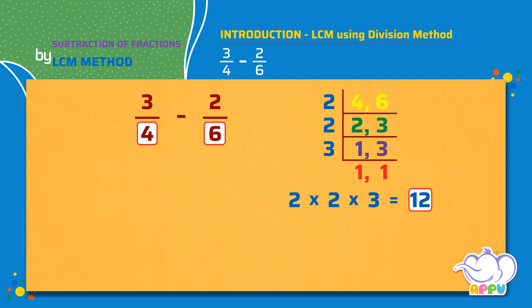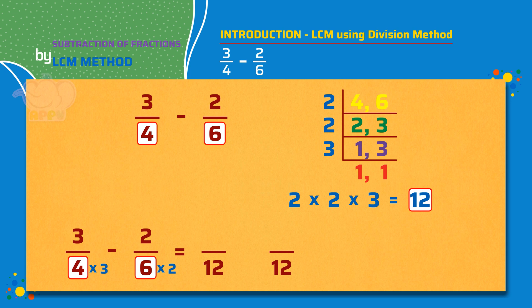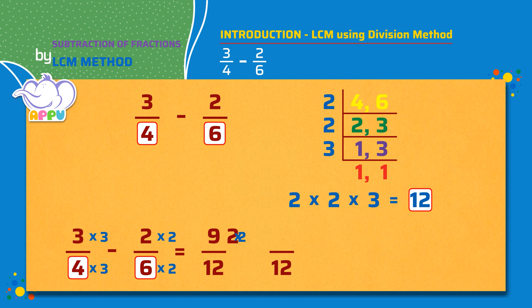Let's make the denominator the same as 12. We multiply the denominator of the first fraction with 3: 4 times 3 equals 12. Next we multiply the denominator of the second fraction with 2: 6 times 2 equals 12. Since we multiply the denominator of the first fraction with 3, we multiply the numerator with the same number: 3 times 3, we get 9 by 12. Since we multiply the denominator of the second fraction with 2, we multiply the numerator with the same number: 2 times 2, we get 4 by 12.